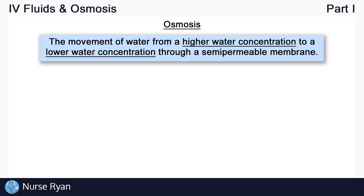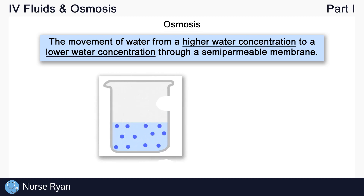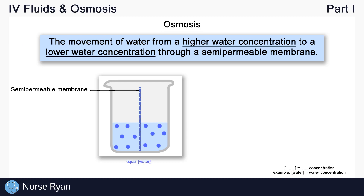Let's look at an example to help break that down. Say we have a container of water with a semi-permeable membrane down the center, so water is allowed to pass through from left to right or right to left. At the moment, the water concentrations on both sides are balanced, so nothing happens. Now let's see what happens when we add a bit of salt on the left side and a lot of salt on the right side. Now the concentration of water is no longer equal on both sides — take a second and think about what the water will do. Which direction do you think it will flow?